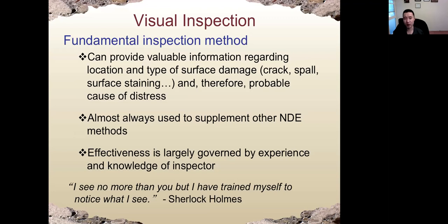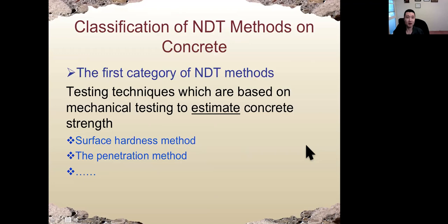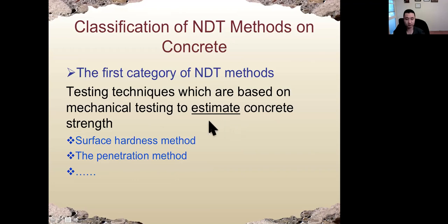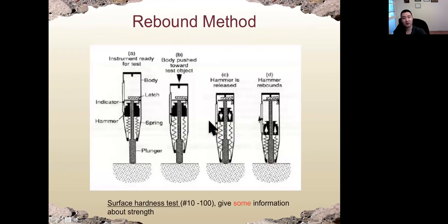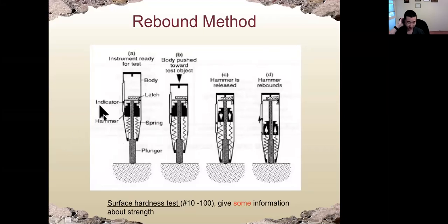Always use visual inspection before any NDT method. So the classification of NDT methods on concrete: the first category is based on mechanical testing, including surface hardness methods and penetration methods — we use these to estimate the strength of concrete. The first one is called the rebound hammer, or rebound method. This is an instrument — inside the hammer we have a plunger, and the plunger is connected to the hammer by a spring.